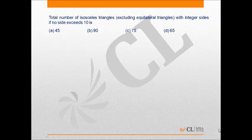This is a problem of geometry where we have to find the total number of isosceles triangles, excluding equilateral triangles, with integer sides if no side exceeds 10.